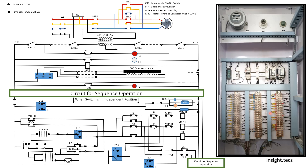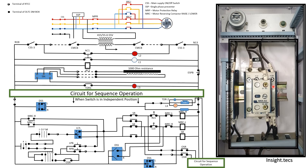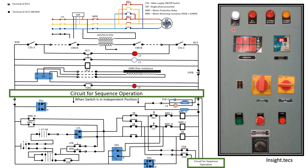Inside the RTCC panel you can see the AC1 contactor. This AC1 contactor is responsible for operating two LEDs located on the RTCC panel. Whenever this contactor is operated and closes, the L1 LED will glow, meaning the RTCC panel supply is on. If it is off, the contactor connects at the other point and the L2 LED will glow. So L1 is for the OLTC supply-on LED, and L2 is for OLTC supply-off.